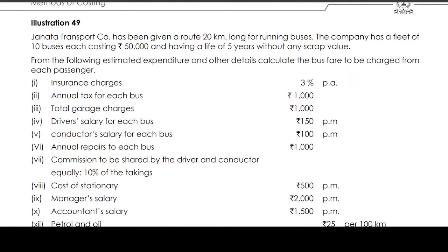The Arata transport company has been given a route of 20 km long for running businesses. The company has a fleet of 10 buses, each costing 50,000 rupees and having a life of 5 years without any scrap value. From the following estimated expenditure and other details, calculate the bus fare to be charged from each passenger.